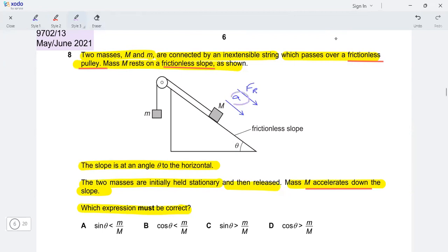Remember, whatever is the direction of the acceleration, the resultant force is in the same direction. Acceleration and resultant force are always in the same direction. So that's how I knew that the resultant force on this mass is down the slope.